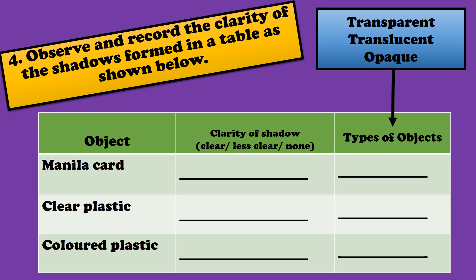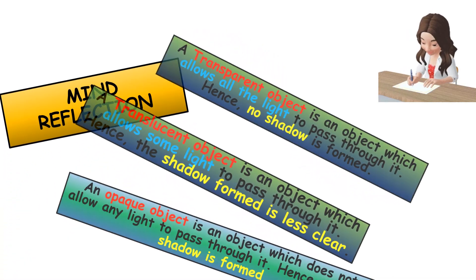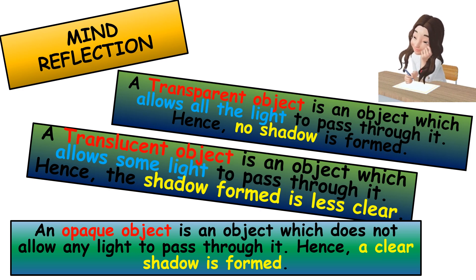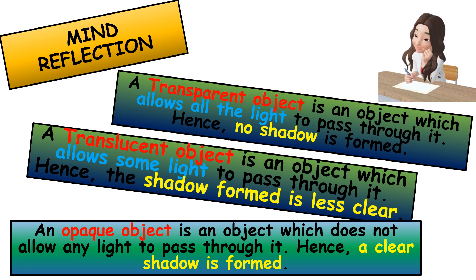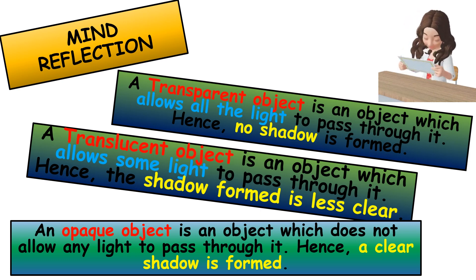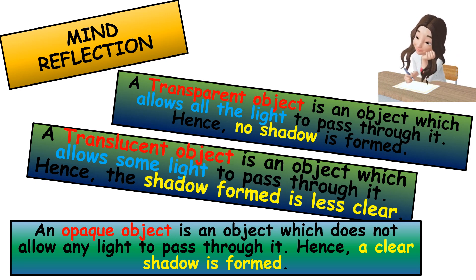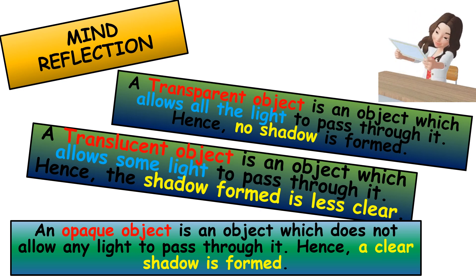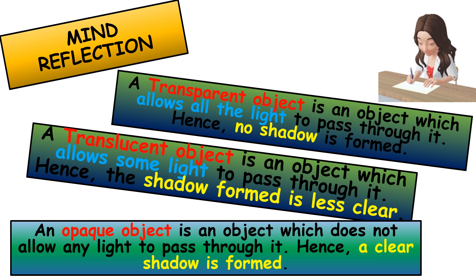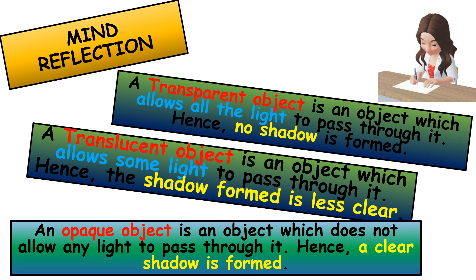Good luck, kids! A translucent object is an object which allows some light to pass through it. Hence, the shadow formed is less clear. An opaque object is an object which does not allow any light to pass through it. Hence, a clear shadow is formed.